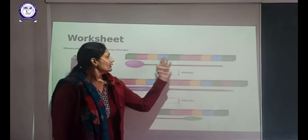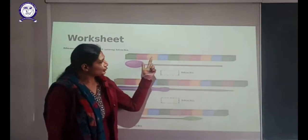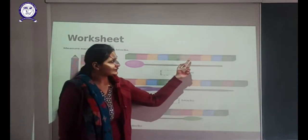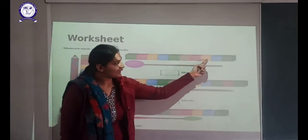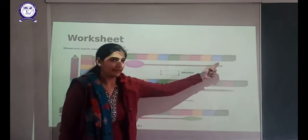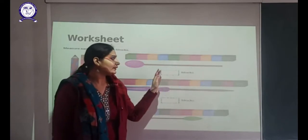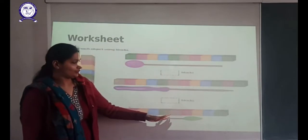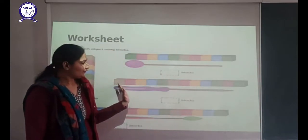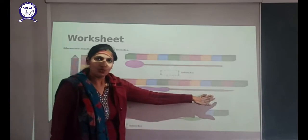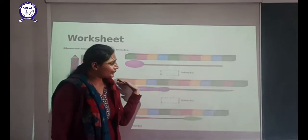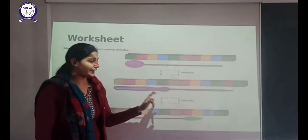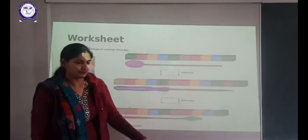For the next object, we need 1, 2, 3, 4, 5, 6, 7, 8, 9 — we need 9 blocks. For the next crayon, you can count and write the number of blocks yourself.